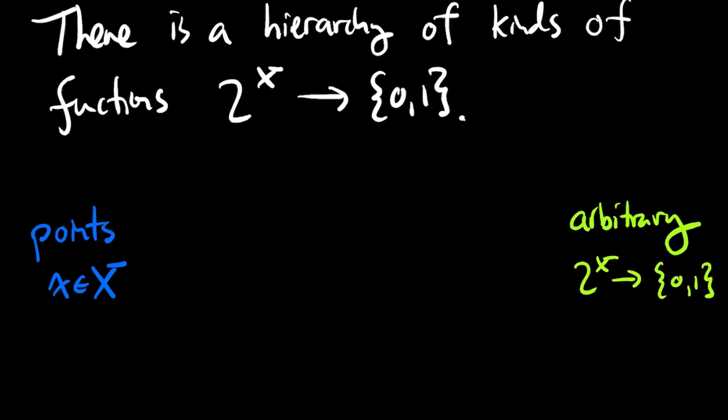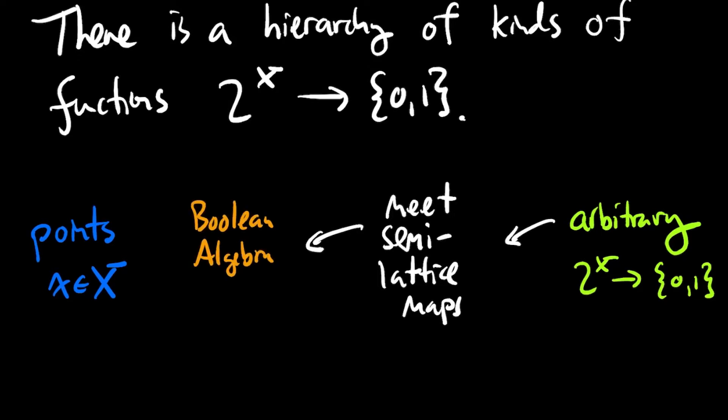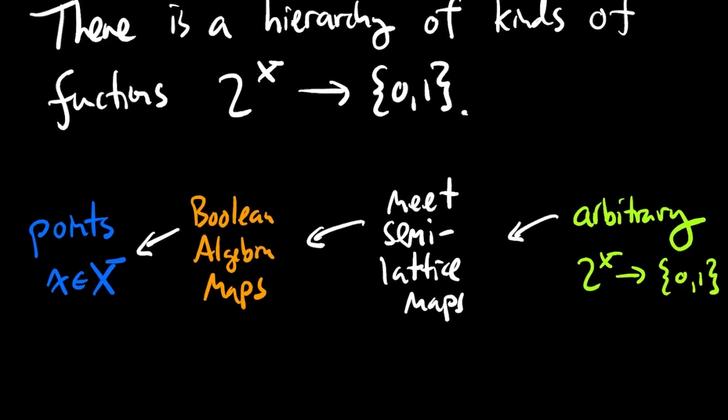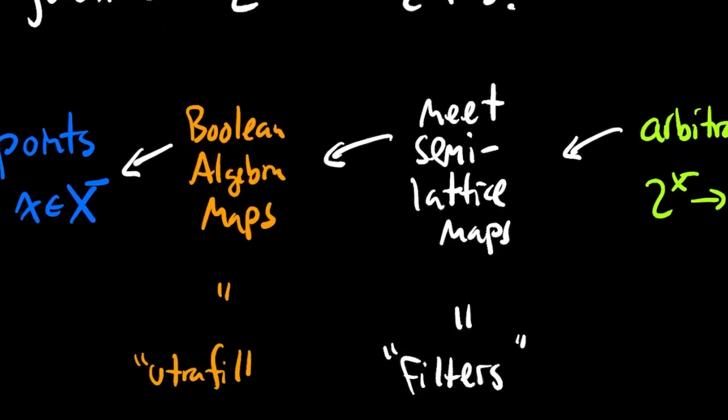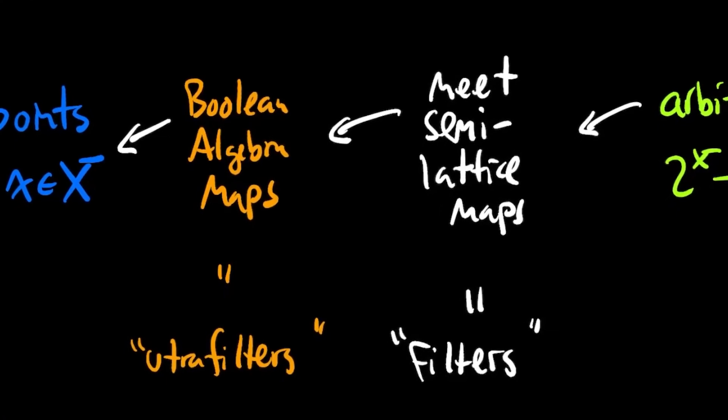Now, let me mention a few ways in between. So if you remember 2^X is a set of sets and {0,1} is a set of sets, we can ask that a function respects intersection. Such a function is called a meet-semi-lattice map. We can also ask that it respect intersection and respect union. Such a map is called a Boolean algebra homomorphism. Now, there's another set of terminology that's used. The meet-semi-lattice maps are also called filters, and the Boolean algebra maps are known as ultra-filters.